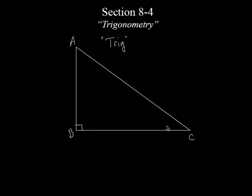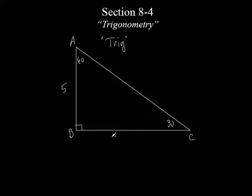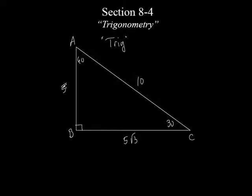We also dealt with special triangles — 30-60-90 and 45-45-90. If I knew one side on one of those special triangles, I could find the others. For example, if this is 30 and this is 60, and the short side is 5, I only know one side but we learned the hypotenuse is twice the short side, so that would be 10, and the longer leg is the square root of 3 times the short side — 5 root 3. With Pythagorean theorem, you had to know two sides to find the third.